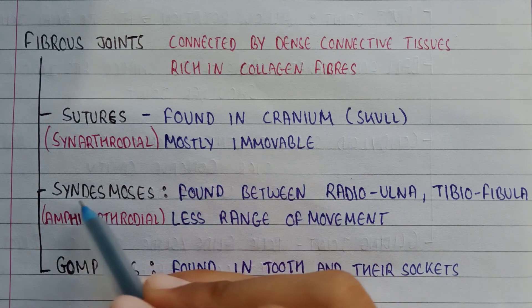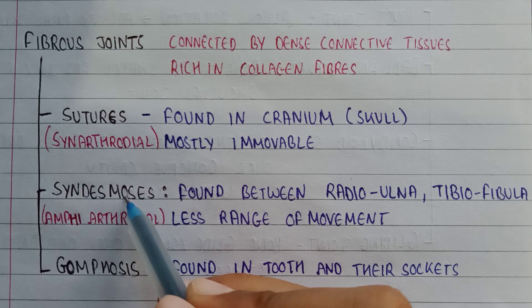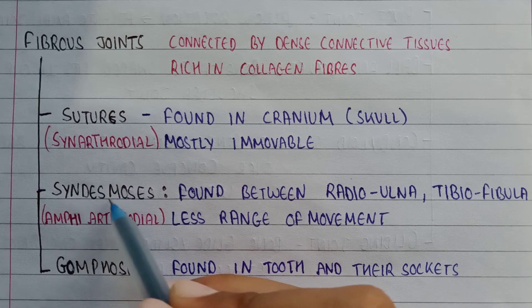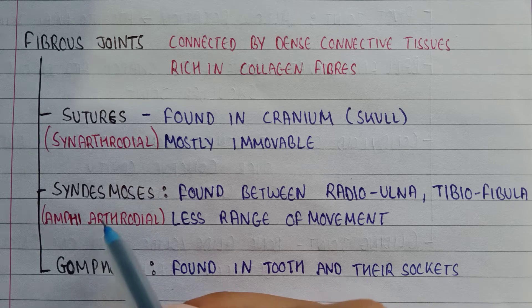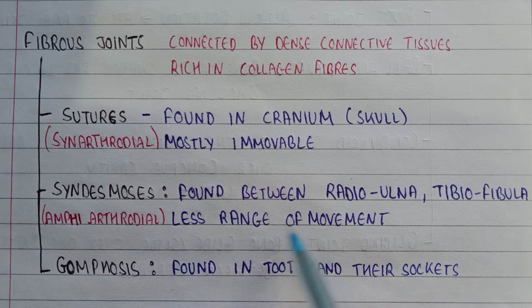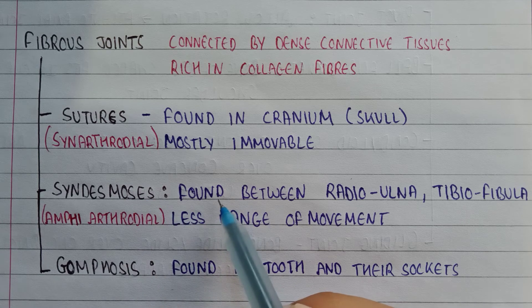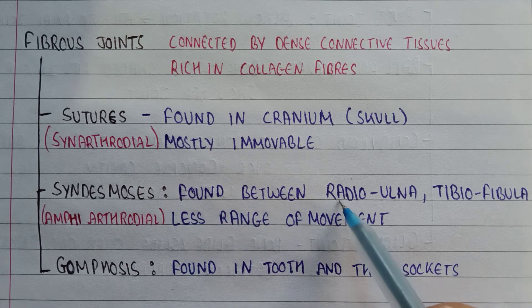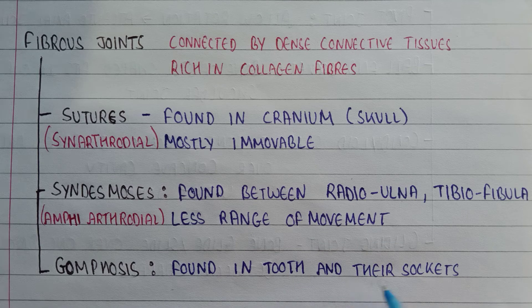Next is syndesmosis, the second type of fibrous joint. The other name of syndesmosis is amphiarthrodial joints. 'Amphi' means a range of movement, meaning it can show a limited range of movement. Syndesmosis is found between the radio-ulna and tibiofibula joints.